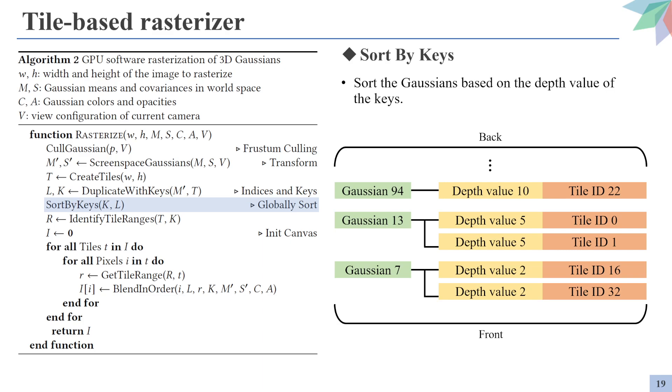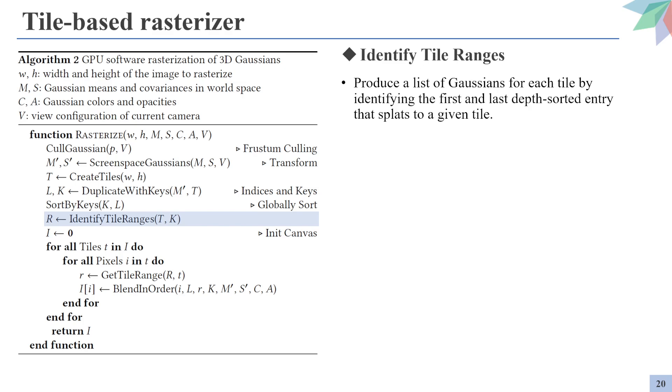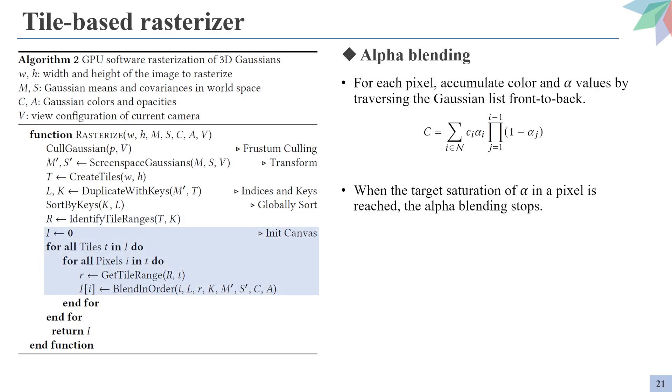The Gaussians are then sorted by the depth values in the ascending order. So those with low depth values will be placed in front and those with high values will be placed in the back. The tiles are then provided a list of sorted Gaussians that are located within them. Now we compute the color for each pixel. The pixels receive the list of Gaussians of the tile they belong to.